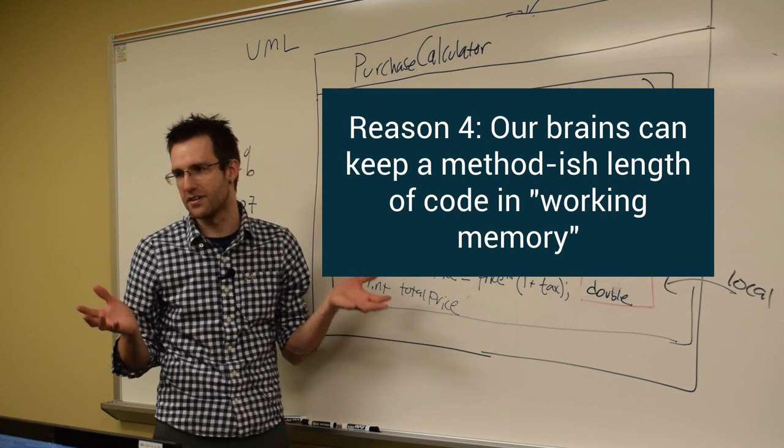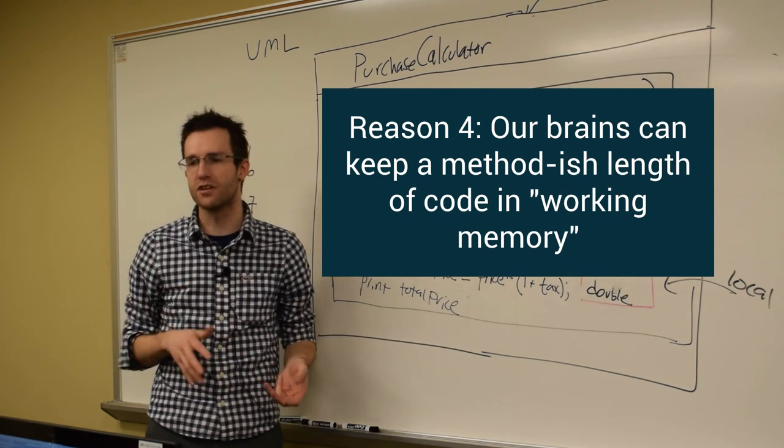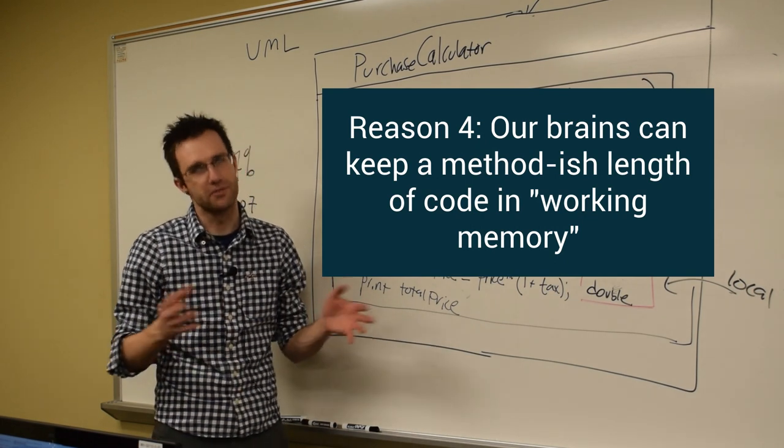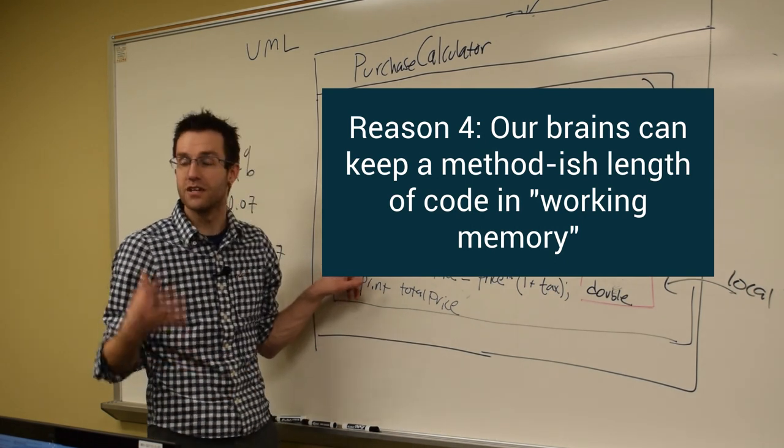That's not being silly. That's saying our brain can work with, you know, they say five to seven, five to eight individual chunks of information. That's why your phone numbers are seven numbers long. One of the reasons why your phone numbers are seven numbers long. Because we can remember that.